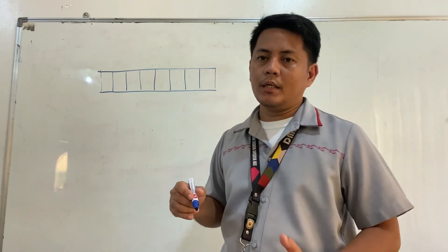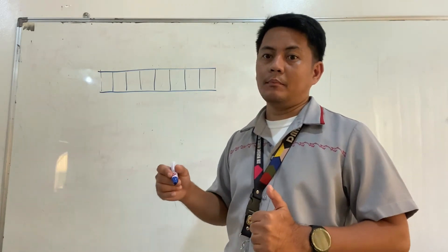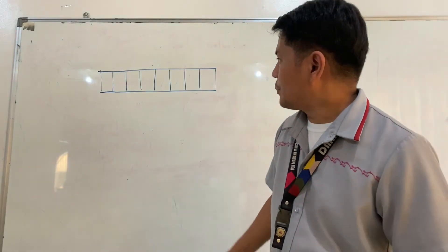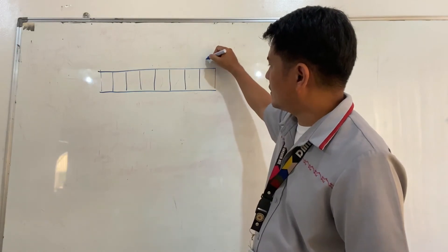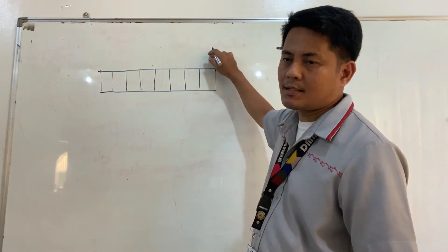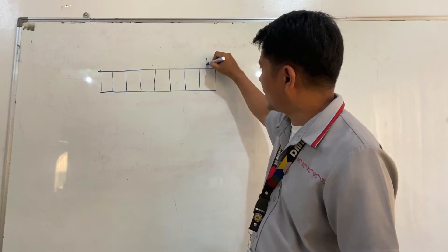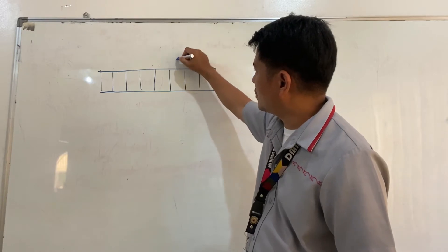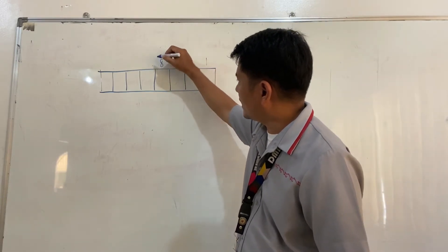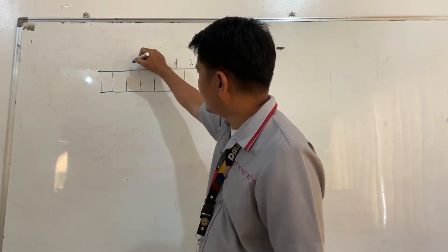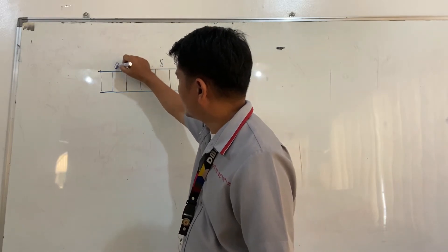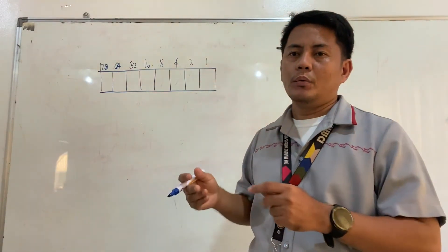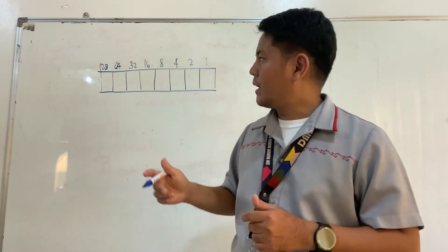We are going to convert 12 as in the previous example. We assign each box a value by doubling: 1, 2, 4, 8, 16, 32, 64, 128, and so on. We simply double the number each time.